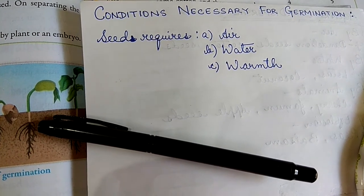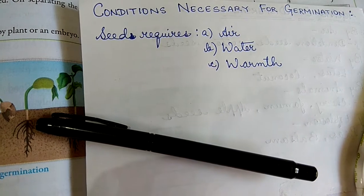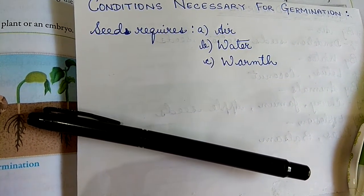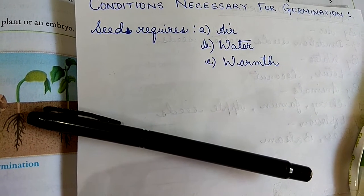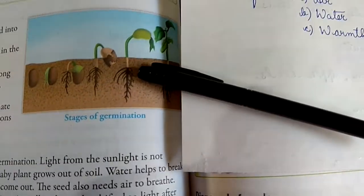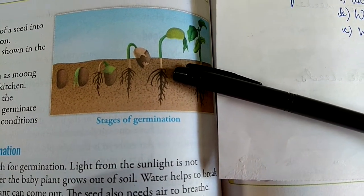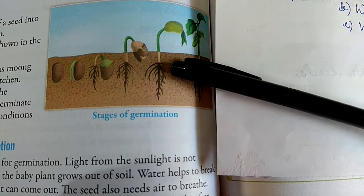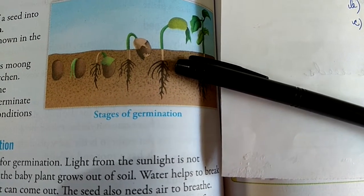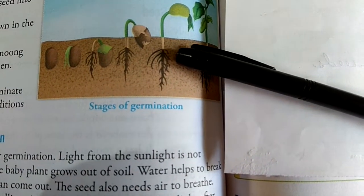A seed requires air, water, and warmth. A plant needs space, sunlight, nutrients, and water from the soil to grow. If plants grow too close to each other, they will not get enough space and nutrients from the soil to support their growth — they will not grow well. So, dispersal of seeds is very important.